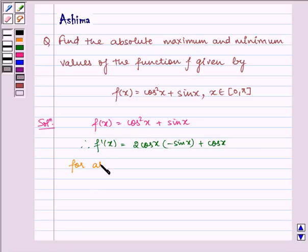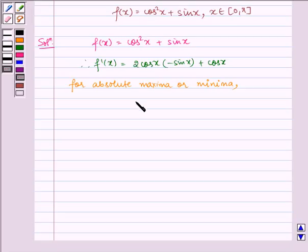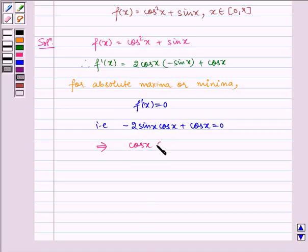Now, for absolute maxima or minima, f'(x) equals 0. That is negative 2sin x cos x plus cos x equals 0, which implies taking cos x common multiplied by 1 minus 2sin x equals 0. Which implies cos x equals 0 or 1 minus 2sin x equals 0.